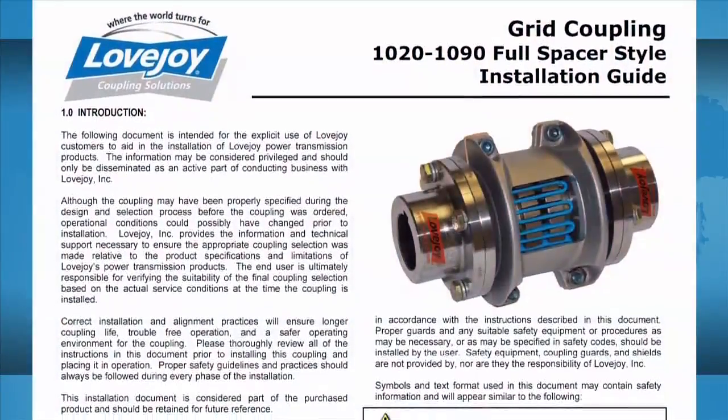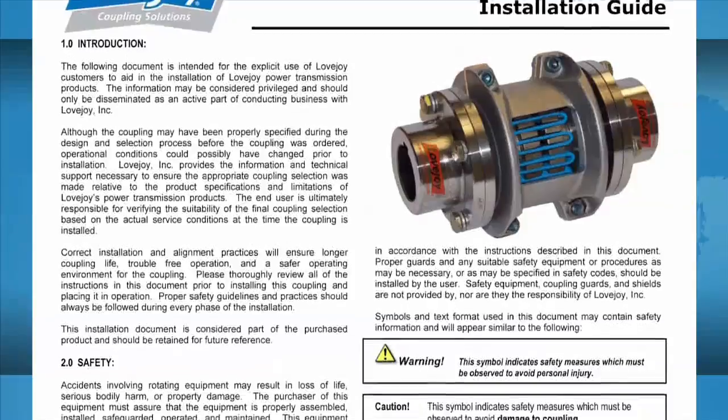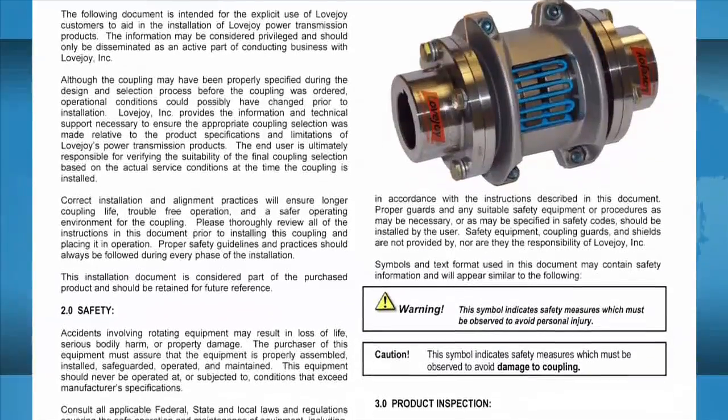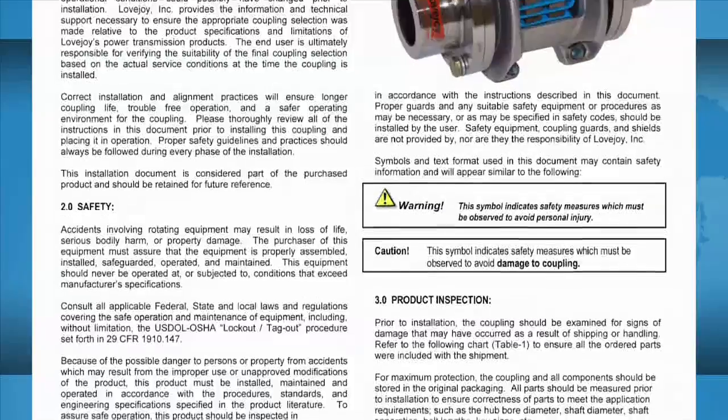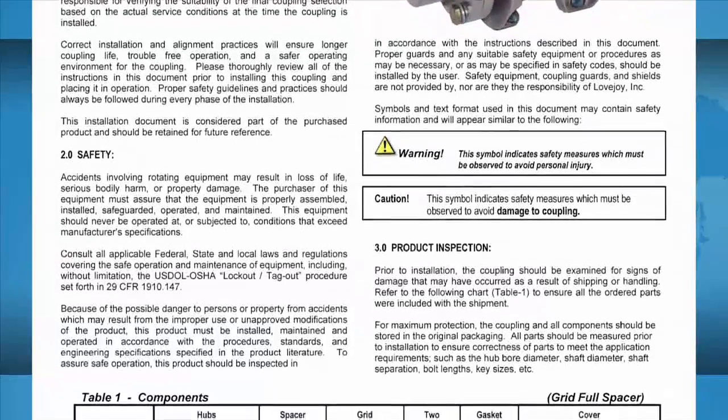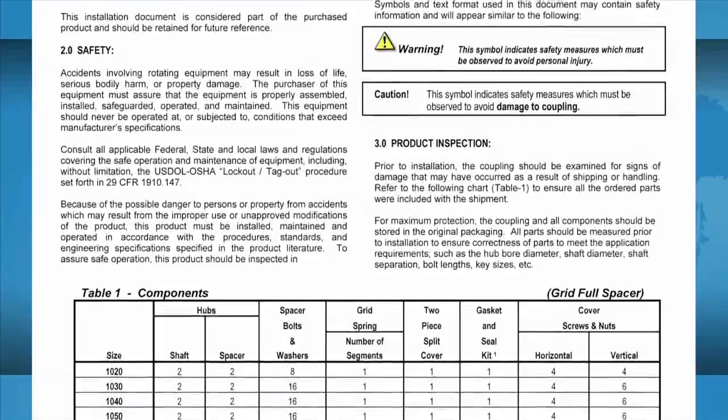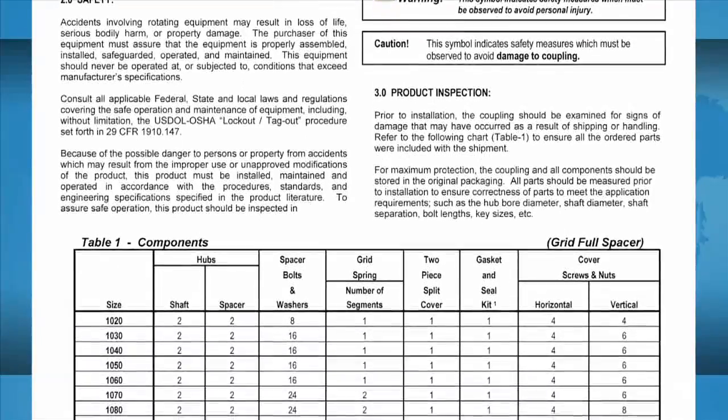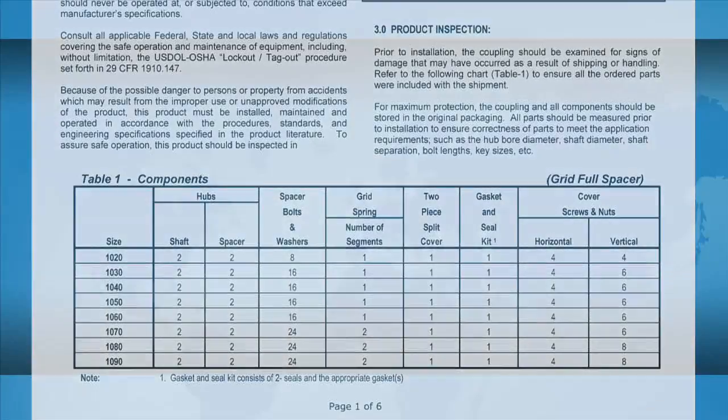Once you locate the installation guide for the coupling you are installing, just click on the PDF icon to download the guide. This installation guide contains important details such as charts showing the allowable coupling misalignment and torque settings for tightening the set screws and bolts. Some installation guides may contain additional performance and dimensional information, important when confirming the accuracy of the coupling selection.